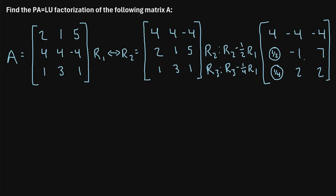Moving on to the second column, the pivot position currently contains a negative one. But considering all values at or below the pivot in that column, the largest value is a two. So we need to swap row two and row three to place the largest value in the pivot position.